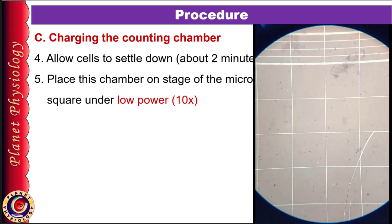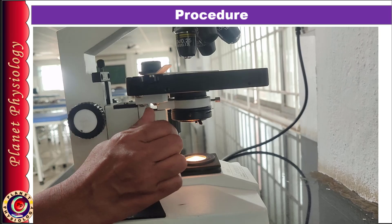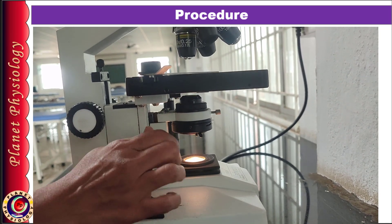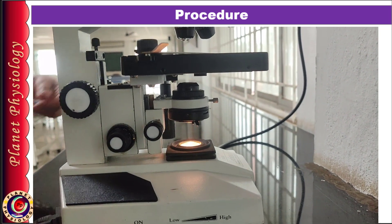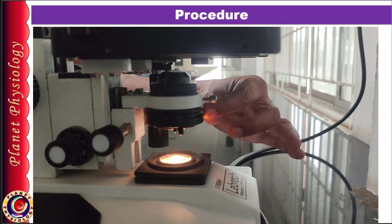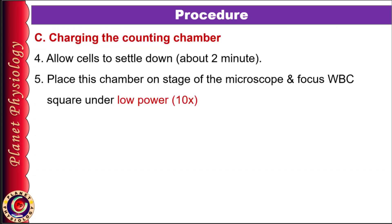WBCs appear like tiny black dots. Make sure the condenser is at the lowest position and the diaphragm is slightly open — this allows easy visualization of the cells. If the light is too bright, you may not be able to visualize any WBCs.